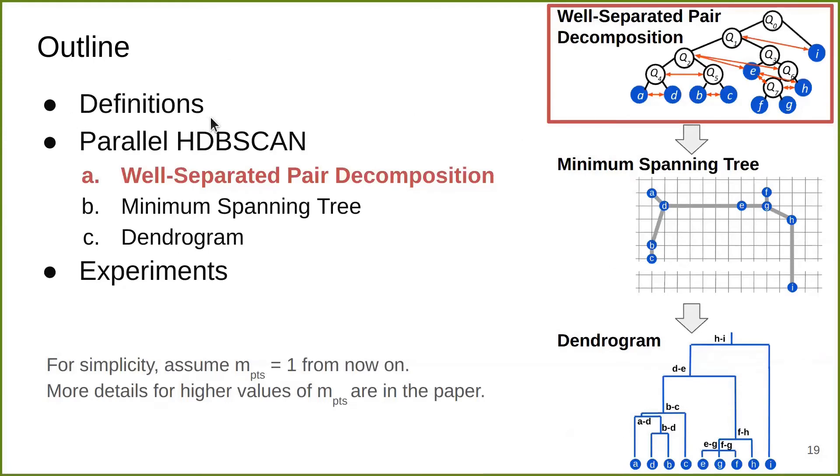Now I have finished the first part of my talk. Next, I'm going to talk about a parallel HDBSCAN algorithm. The first part is well-separated pair decomposition. For the sake of simplicity, for the parameter m, I'm going to use m equals 1 from now on, and we include more details for higher values of m in our paper.